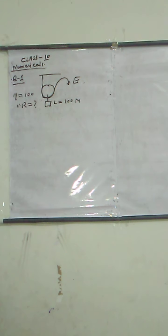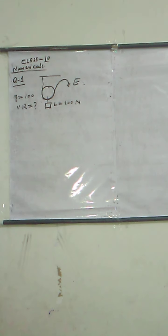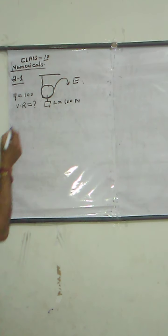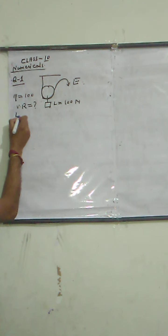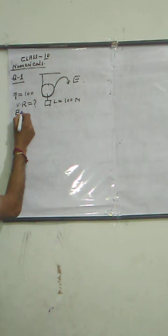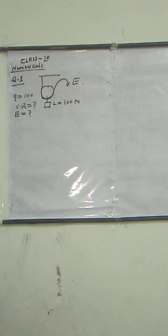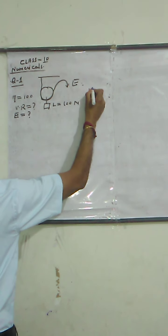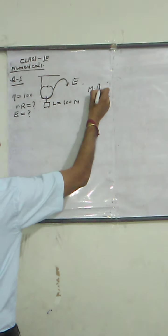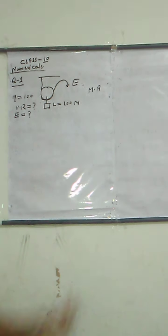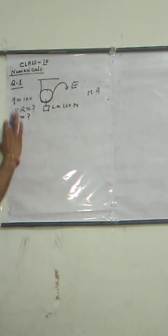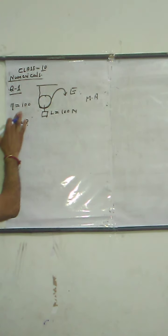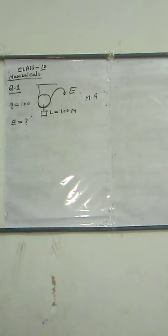We also have to find the value of effort and the mechanical advantage. So the things to find are: velocity ratio, effort, and mechanical advantage.